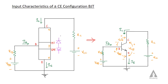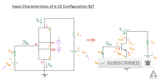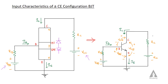A transistor has two junctions: the emitter-base junction and the collector-base junction. These junctions are biased using VBB and VCC. We have base resistance RB and collector resistance RC. The emitter is the ground terminal, base is the input terminal, and collector is the output terminal. We have RB, VBB, RC, and VCC in the circuit.